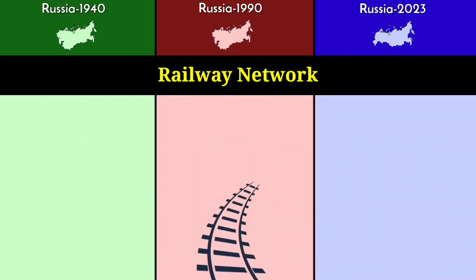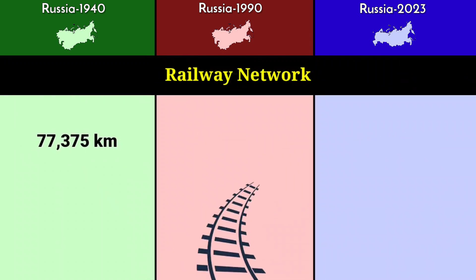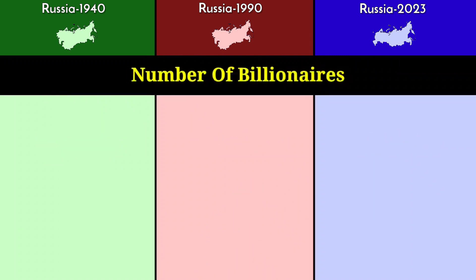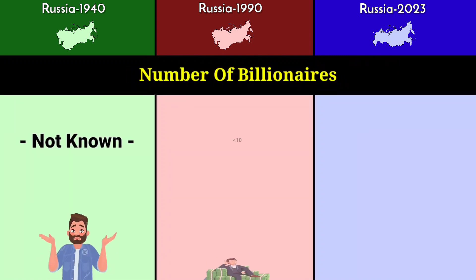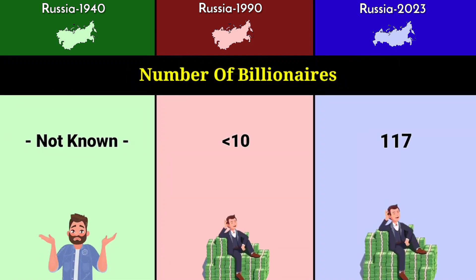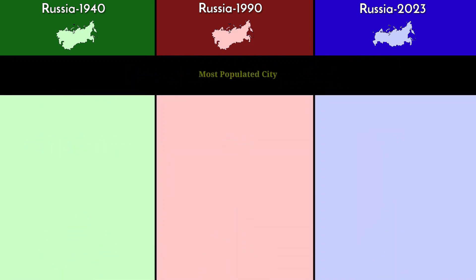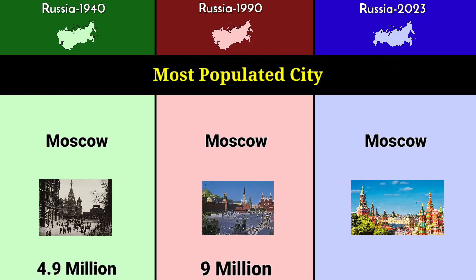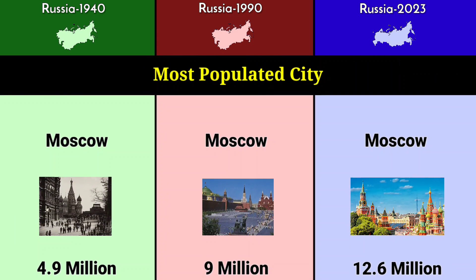Railway network: 77,375 kilometers in 1940, 147,400 kilometers in 1990, and 85,494 kilometers in 2023. Number of billionaires: not known in 1940, below 10 in 1990, and 117 in 2023. Most populated city: Moscow for all three periods — 4.9 million in 1940, 9 million in 1990, and 12.6 million in 2023.